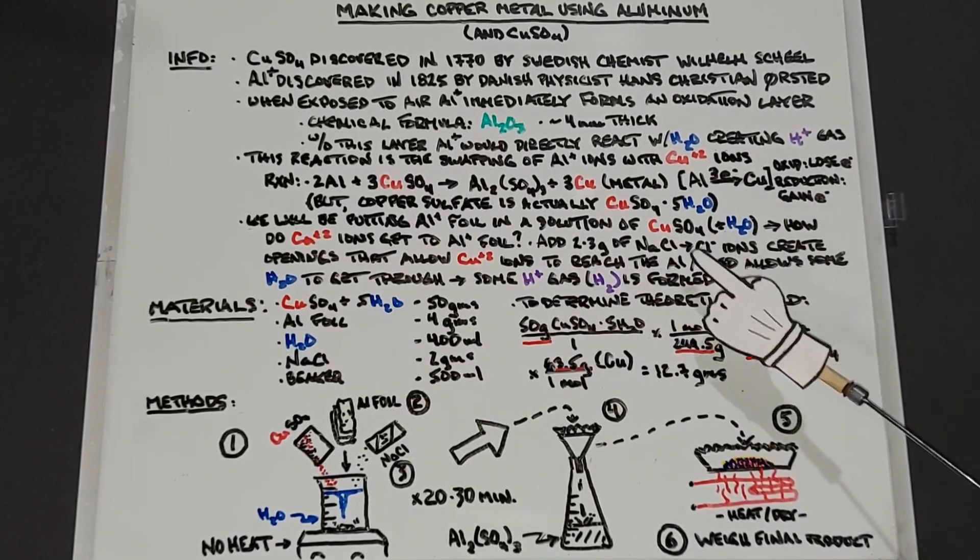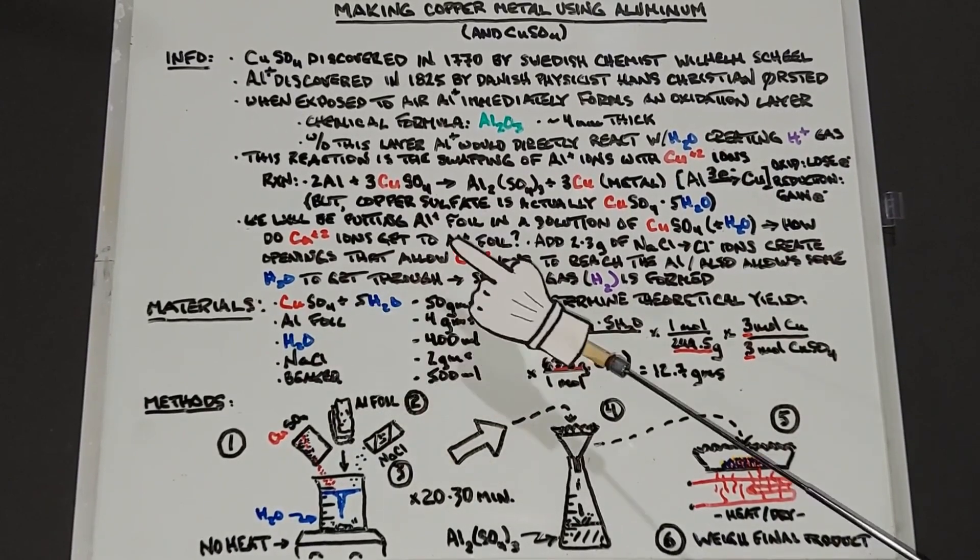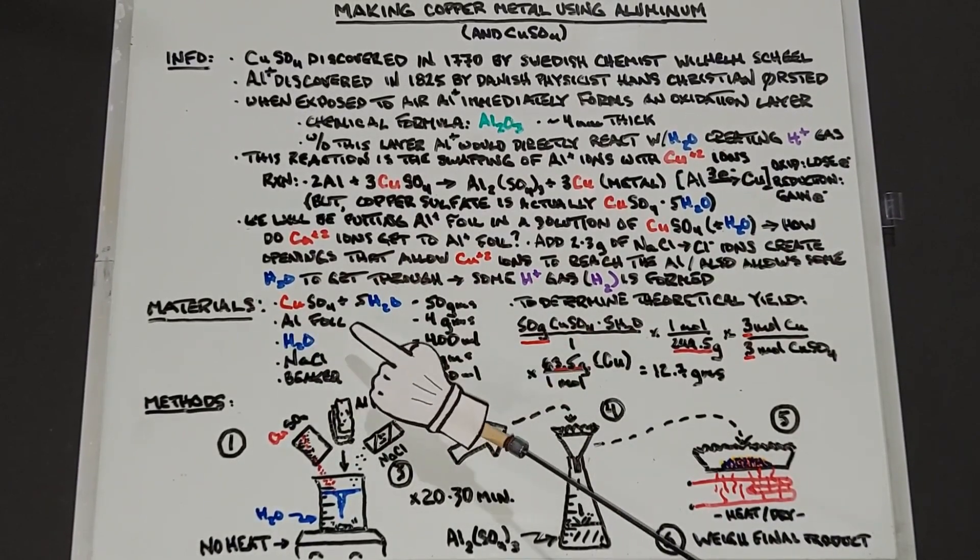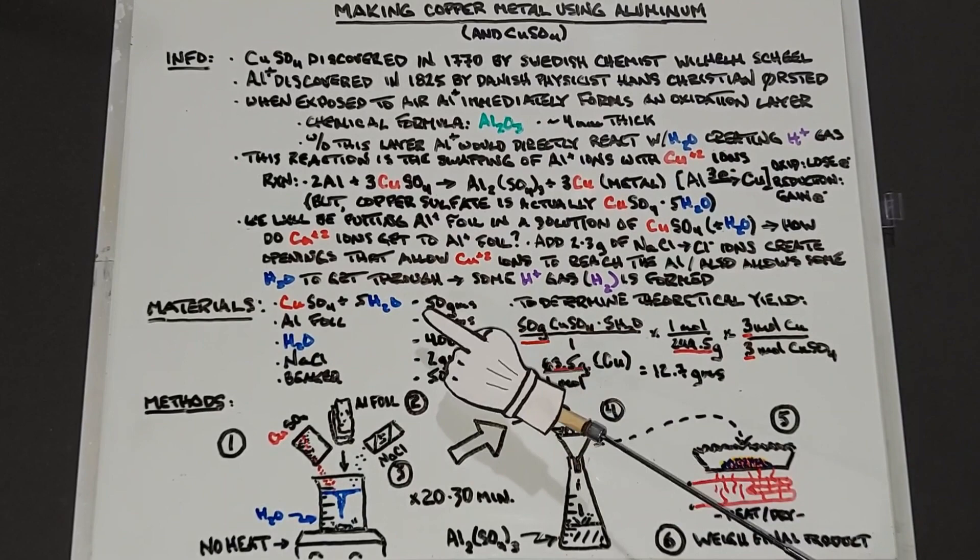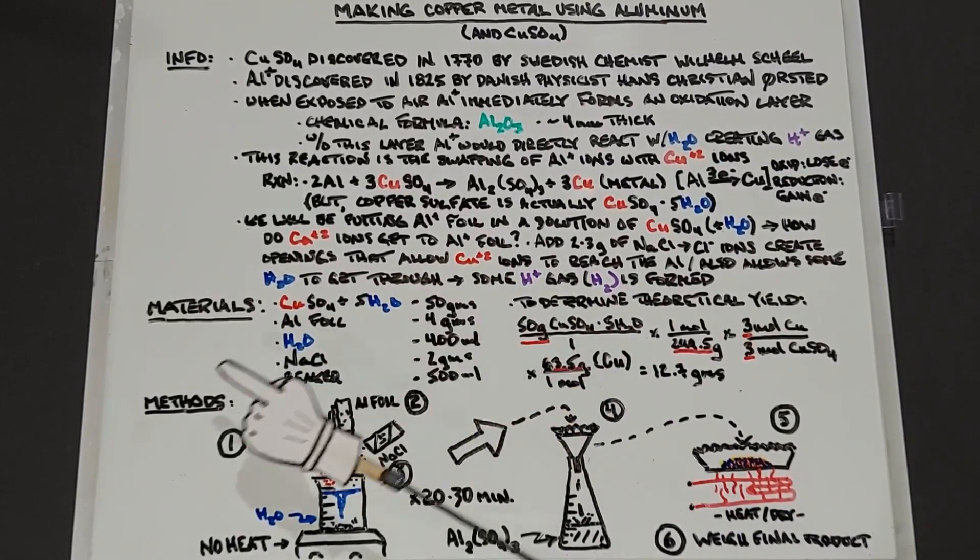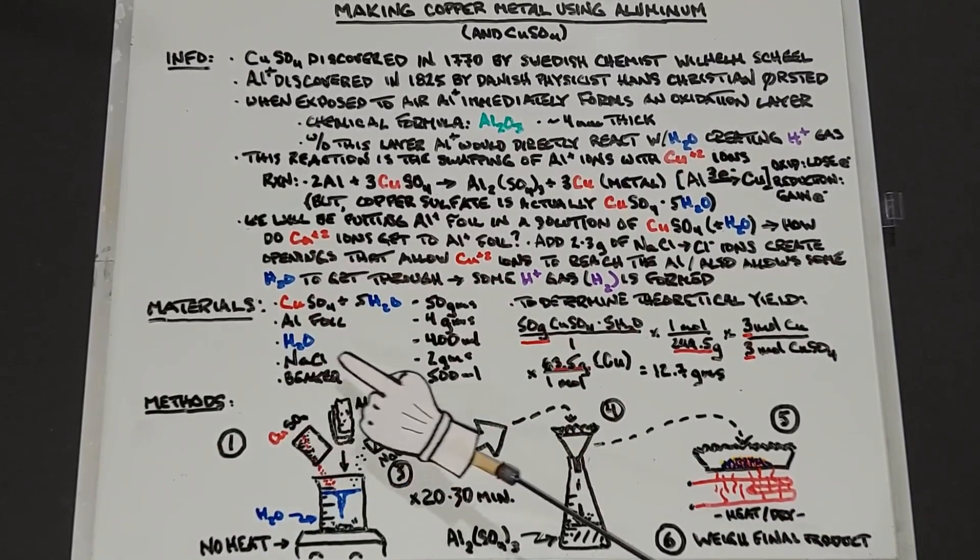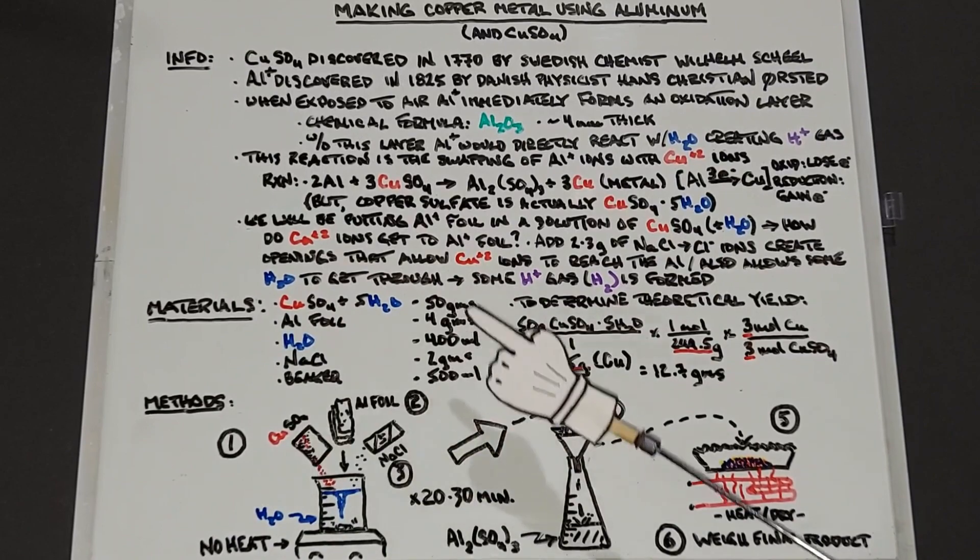For materials we need copper sulfate pentahydrate 50 grams, aluminum foil 4 grams, and this ratio is the best one. It's already been determined, I didn't make this up or figure it out mathematically.